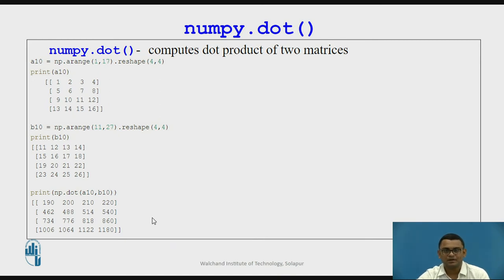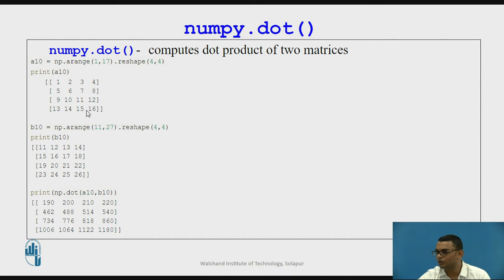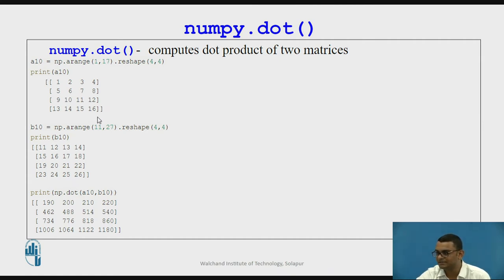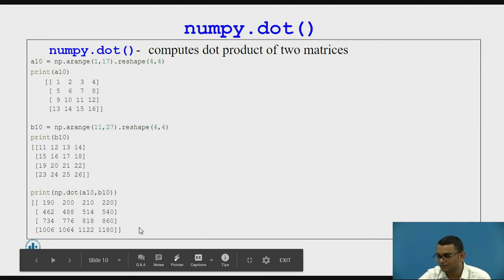Moving ahead, let us see how to perform multiplication of two matrices using the dot function. I create a 4 by 4 matrix A10 holding values from 1 to 16 using a range function, and another matrix B10 holding values from 11 to 26 in the same 4 by 4 shape. I then perform multiplication using the dot function, passing the two matrices as parameters, which gives us the dot product result.